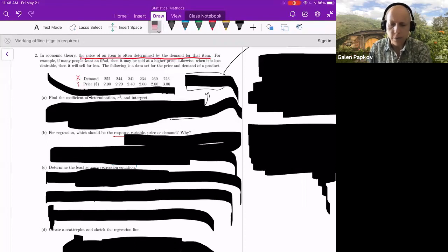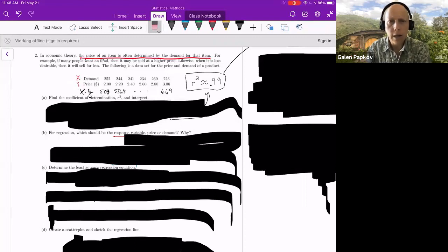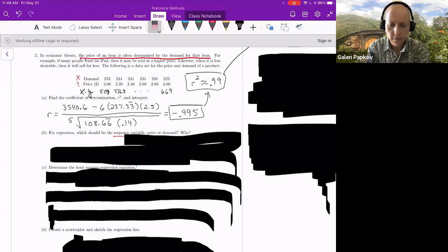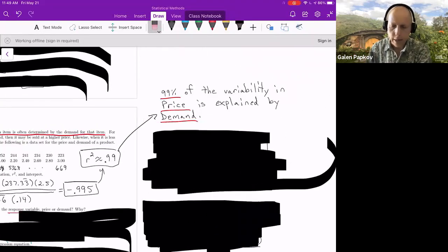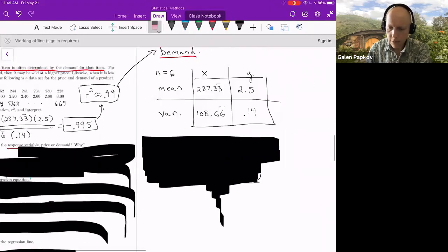And part A asked for us to find R squared and to interpret it. So again, first things that we want, we are going to want to get our X times Y. And this is now column by column, just by the way the data are organized. And so 252 times 2 is 504, and so on. And when you add all this up and compute your correlation coefficient, you should end up getting negative 0.995. Now I did end up going through first and getting the mean and the variances for each. And so I did end up getting that.